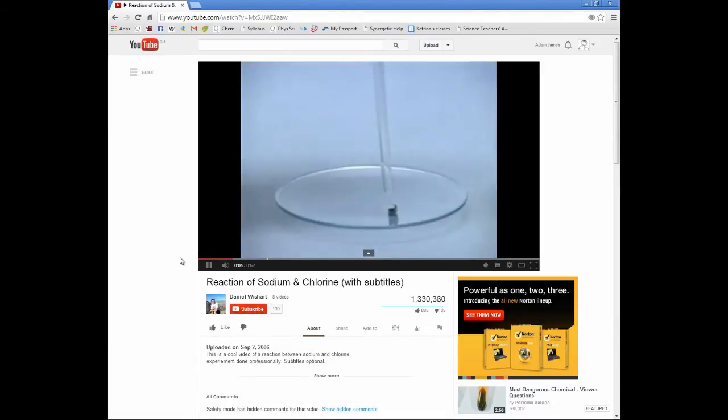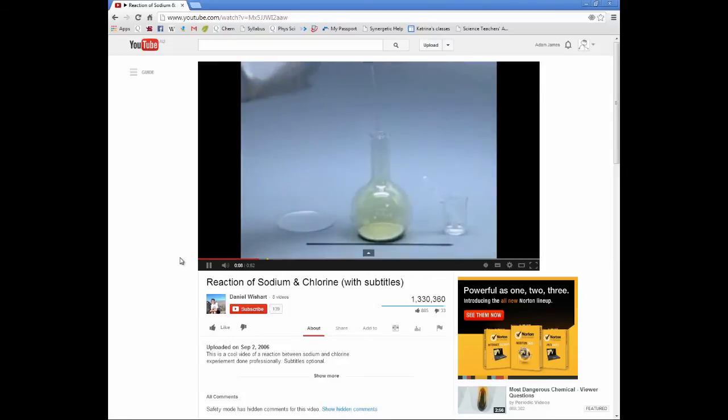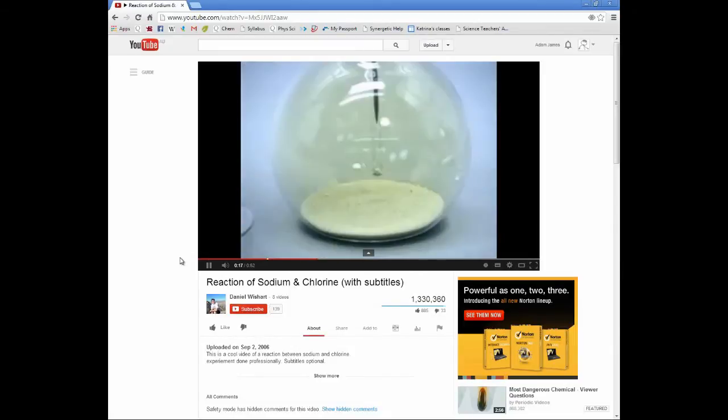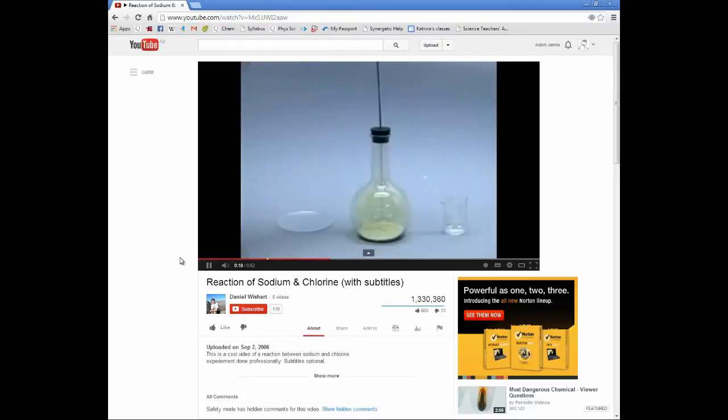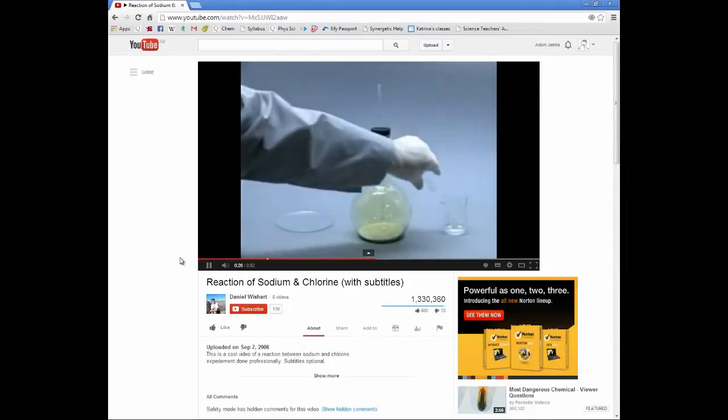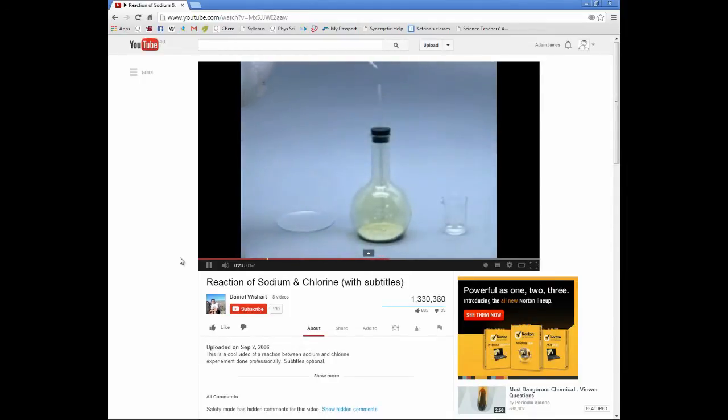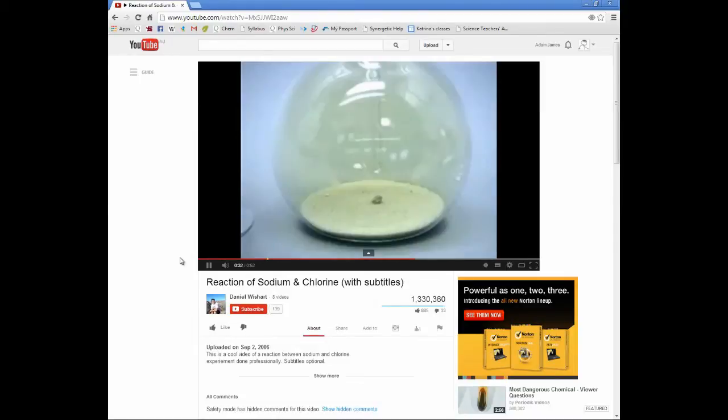A small piece of sodium metal is placed in a flask containing yellow chlorine gas. The flask also contains sand to prevent the heat which will be generated by the reaction from cracking the glass. Initially, no reaction is observed between the sodium and the chlorine. The reaction will be initiated by adding a drop of water to the sodium.